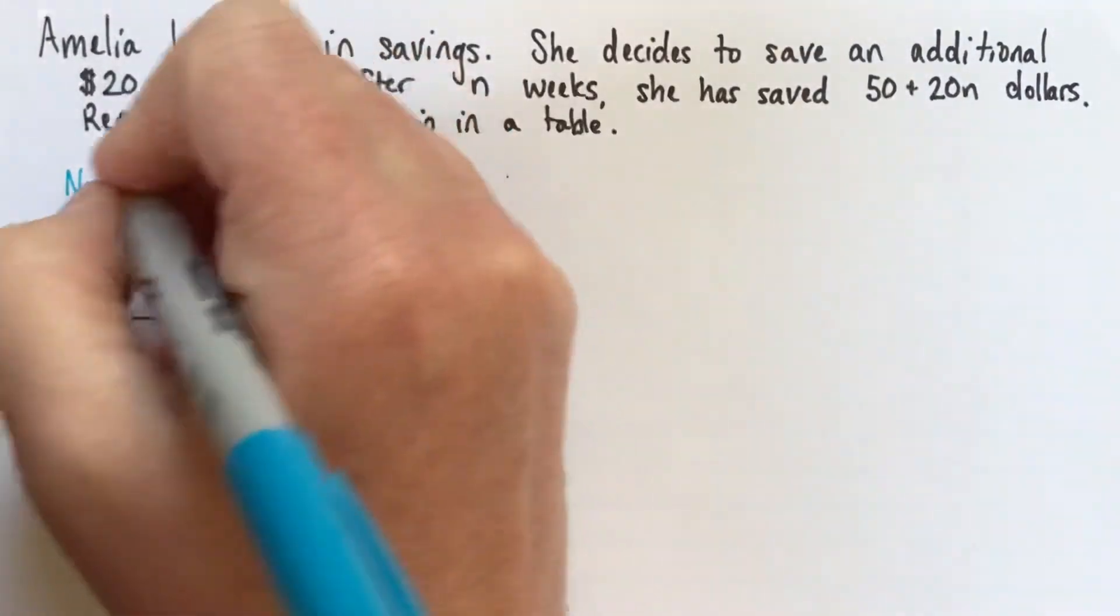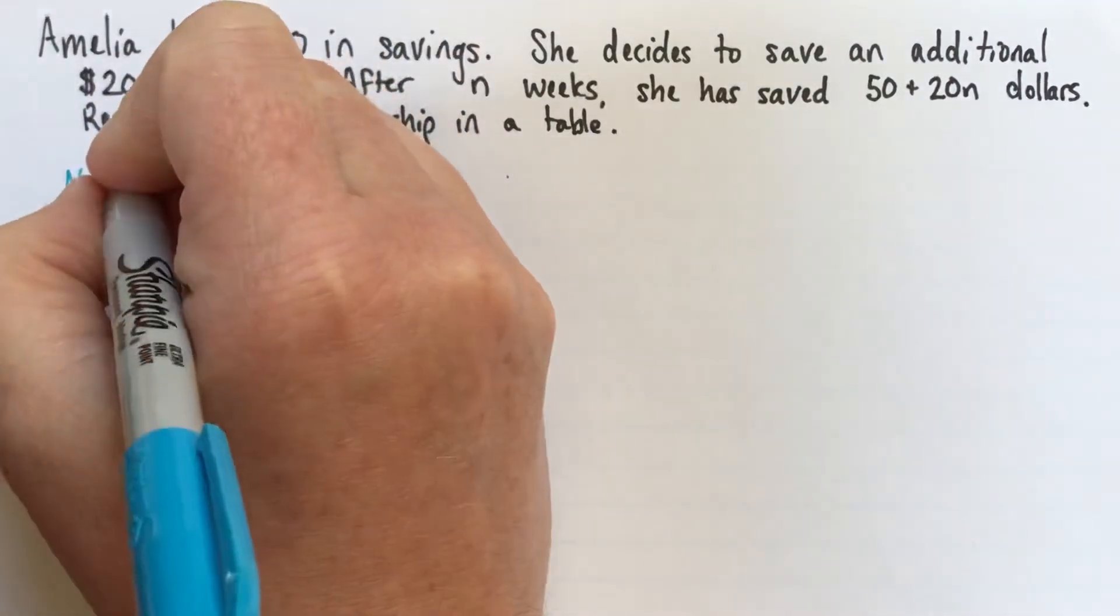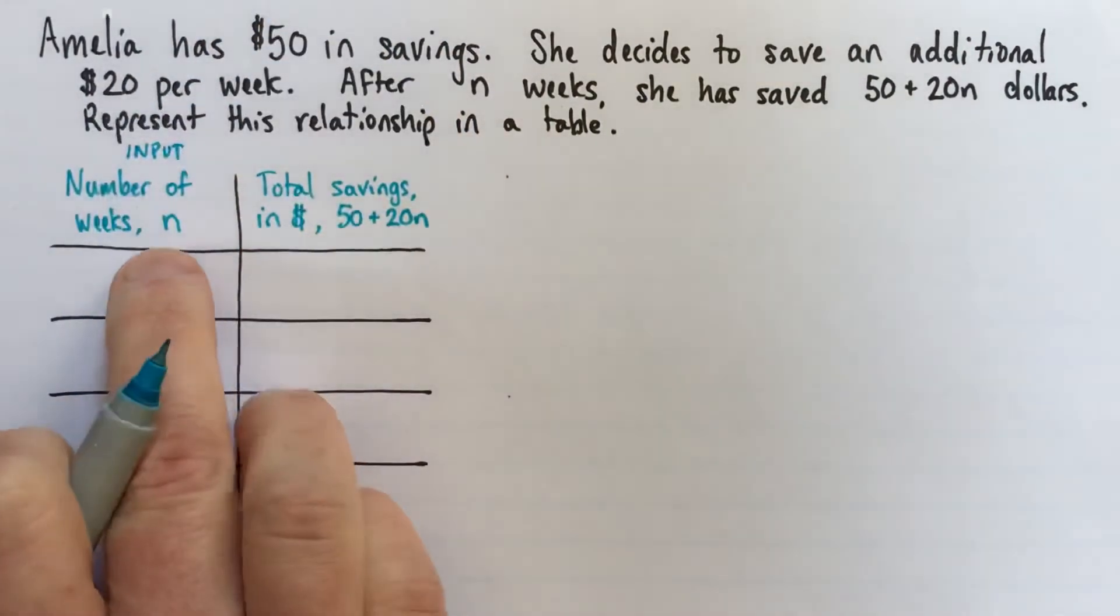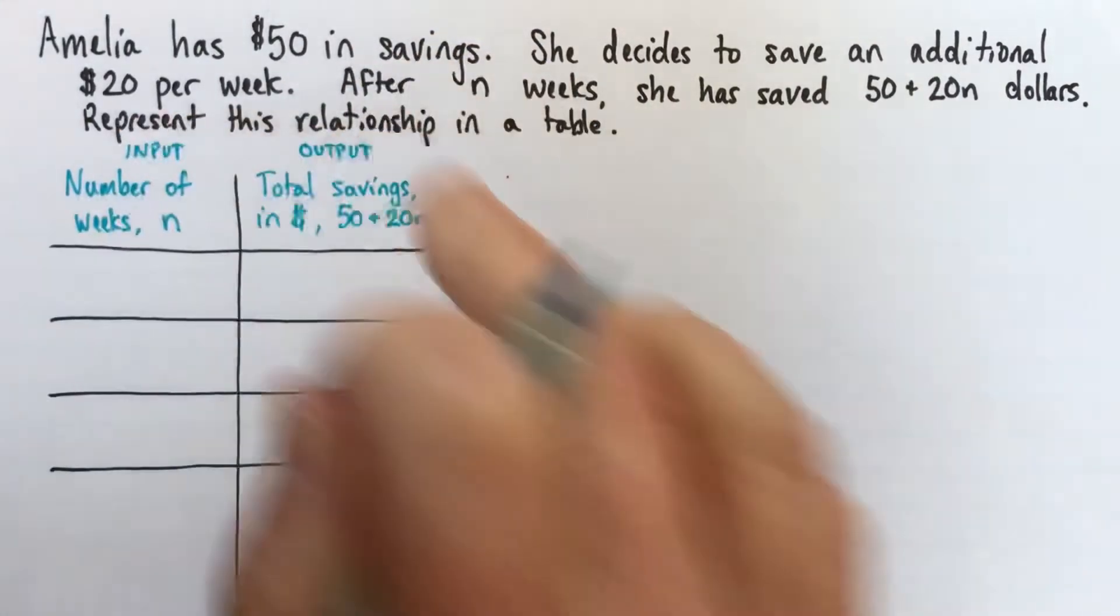So here, I'm just going to make a note here. If you have titles like this, you don't need to write this down. But if you don't, then our n is the input. And the other expression is the output. We've got an input-output table.